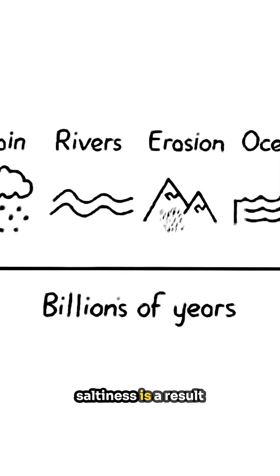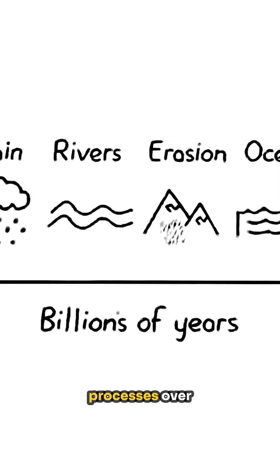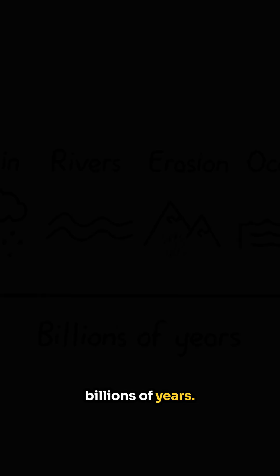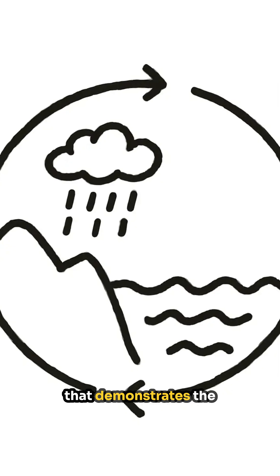In short, the ocean's saltiness is a result of gradual natural processes over billions of years. It's a fascinating cycle that demonstrates the interconnectedness of our planet's water and land.